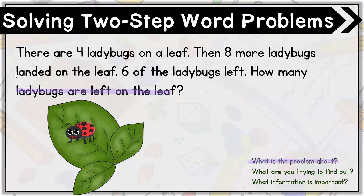Let's read the problem again. There are four ladybugs on a leaf. Then, eight more ladybugs landed on the leaf. Six of the ladybugs left. How many ladybugs are left on the leaf? What are we trying to find out? We are trying to find out how many ladybugs are left on the leaf.